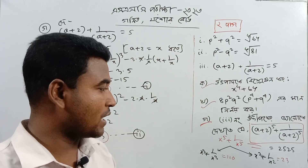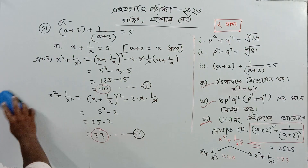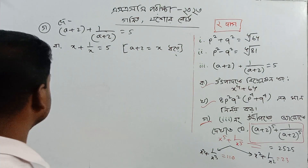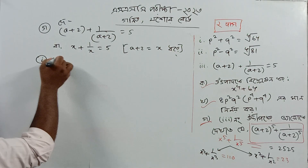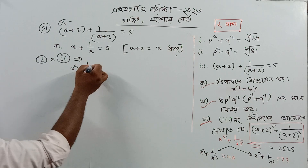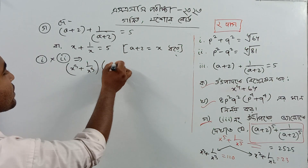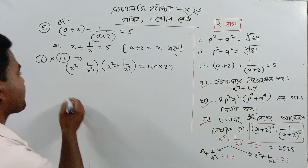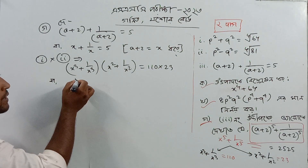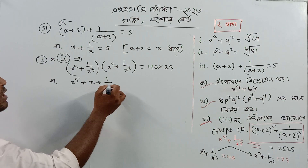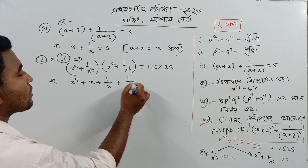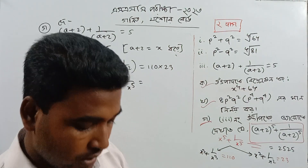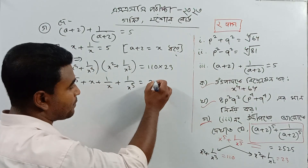We just looked at it. Let's see what we did — 1 number and 2 numbers. So, x cube plus 1 by x cube into x square plus 1 by x square equals 110 into 23. If we go x cube, we go x5, we go x, we go 1 by x, we go x cube 1 by x cube to the power 5, and if we go x cube, we go to 110 into 23, 110 into 30, and if we go to 2 by 7, we go to 330.